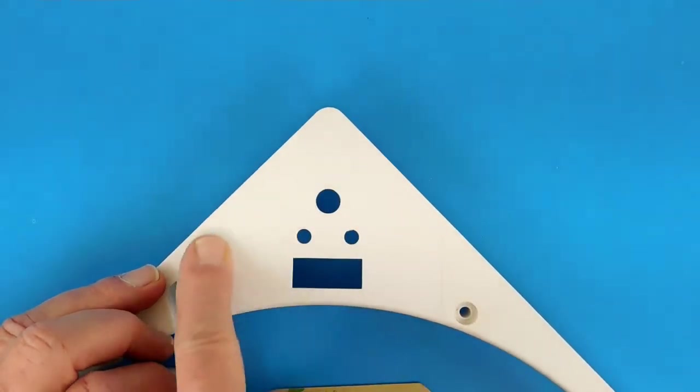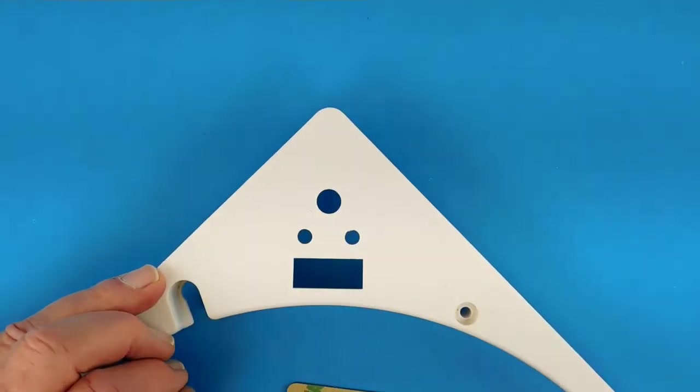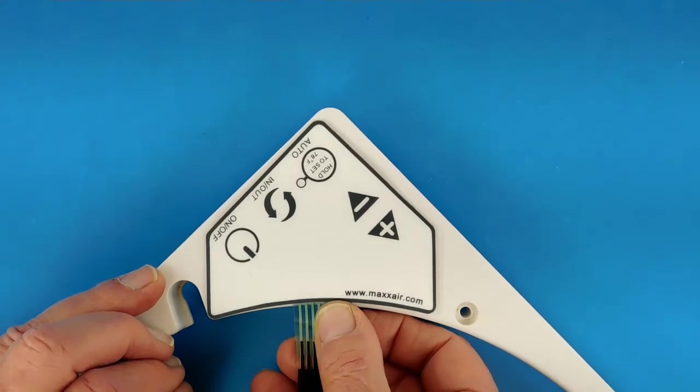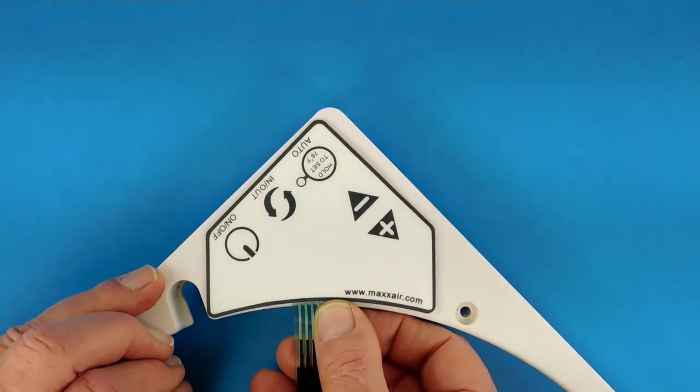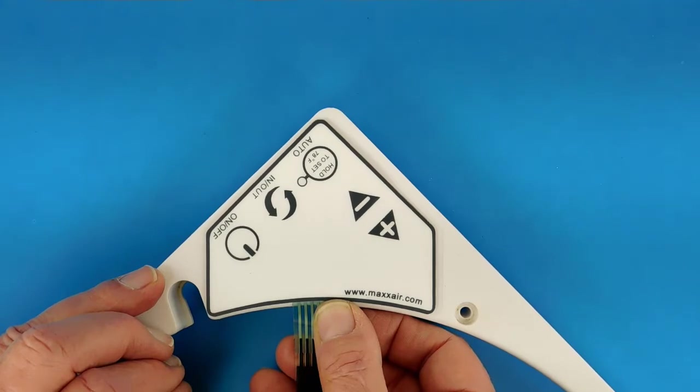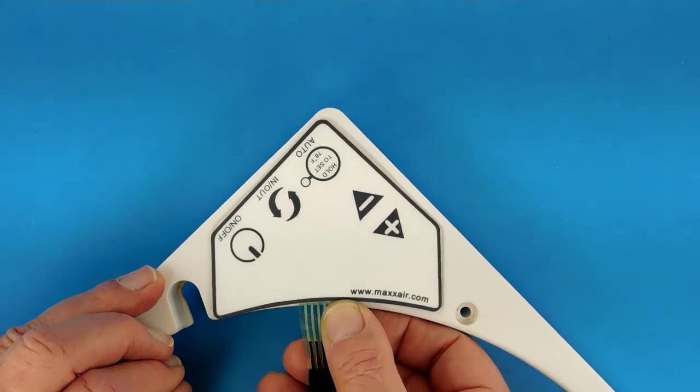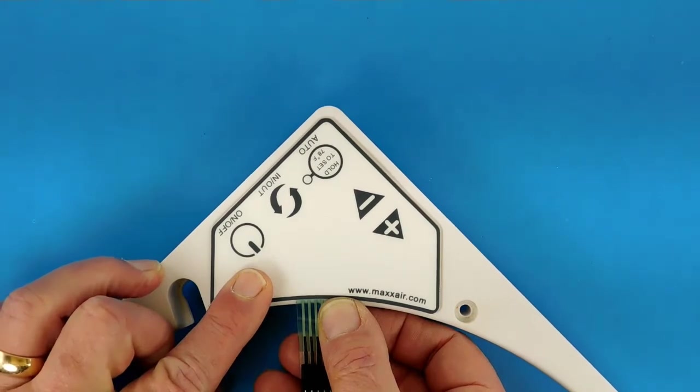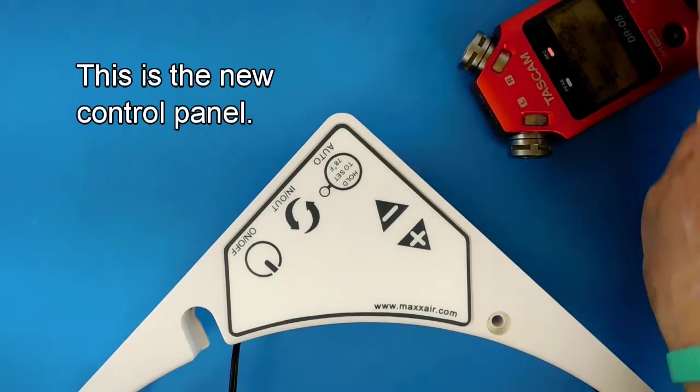After I used some lighter fluid to clean that off, then I used some isopropyl alcohol to remove any remaining oily residue. So I should be able to stick this on there, put it back on the bench and test it, and then I'll report back to you in the next section of the video and tell you whether or not the control panel fixed the problem.